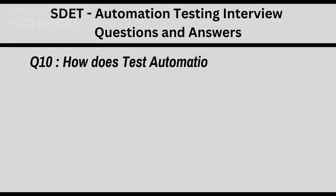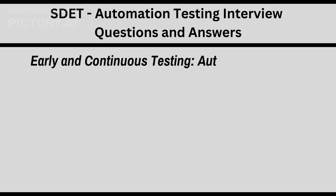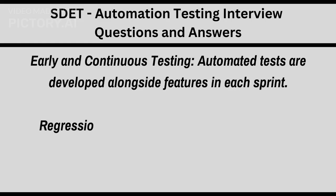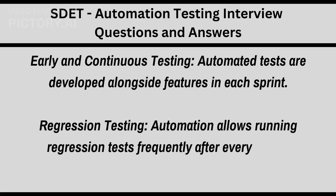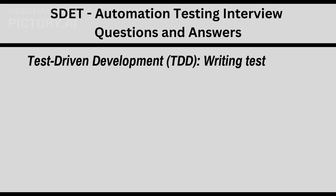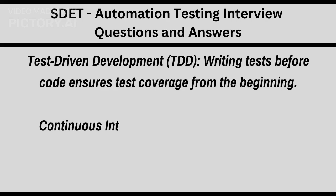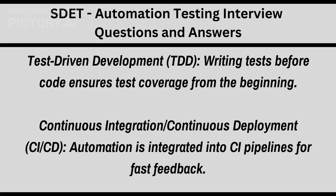Q10. How does test automation fit into the Agile development process? Early and continuous testing: automated tests are developed alongside features in each sprint. Regression testing: automation allows running regression tests frequently after every sprint. Test-driven development (TDD): writing tests before code ensures test coverage from the beginning. Continuous integration/continuous deployment (CI/CD): automation is integrated into CI/CD pipelines for fast feedback.